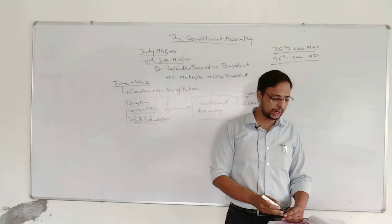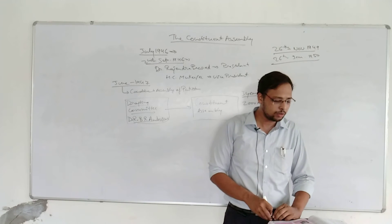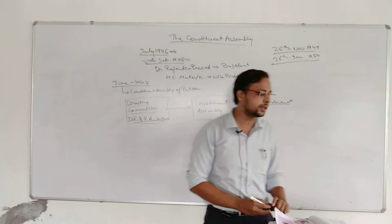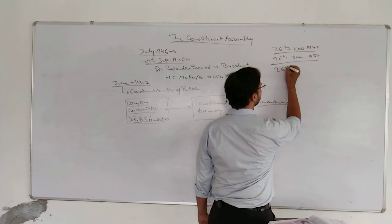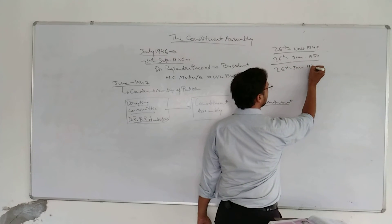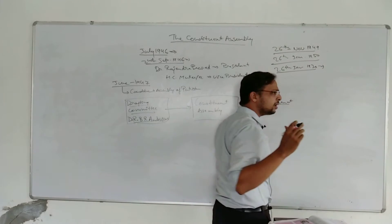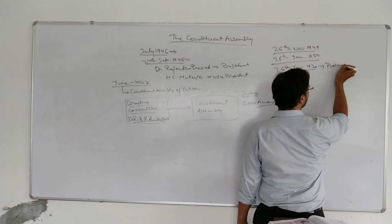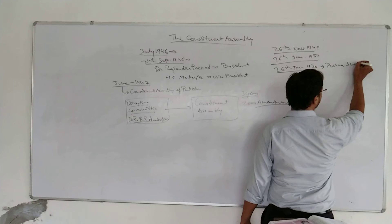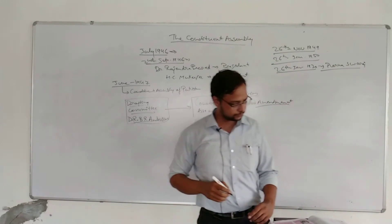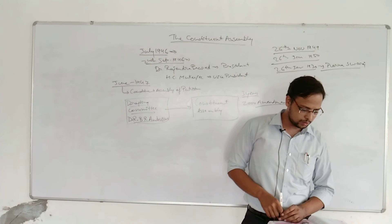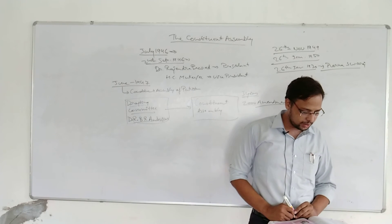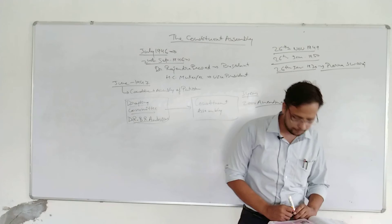The day 26th January was chosen because the Indian National Congress had declared a demand for Purna Swaraj, or complete independence, on 26th of January 1930 — that was the day on which the Indian National Congress declared India to be a Purna Swaraj. This is celebrated as Republic Day as the constitution of India declared India as a Republic and marked the completion of transition from a governed nation to an independent Republic.